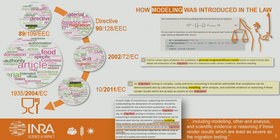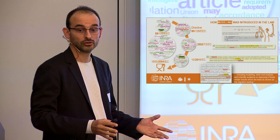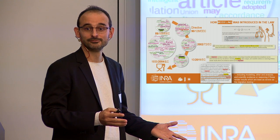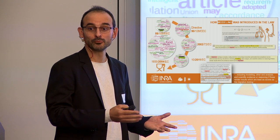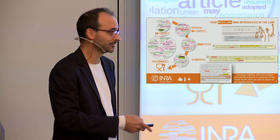What is stated is that modeling, order analysis, and scientific evidence are permissible if they render results which are at least as conservative as migration testing. That's all. You can use almost everything you want, as long as you verify that condition. It's open now.